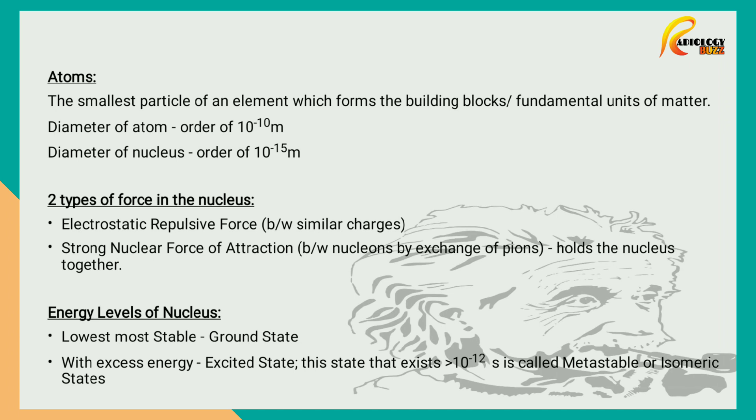Energy Levels of a Nucleus. When the nucleus is in its lowest, most stable state, it is called as a ground state. When the nucleus has some excess energy, it is said to be an excited state. This excited state, which lasts longer than 10 raised to minus 12 seconds, is called a metastable or isomeric state.